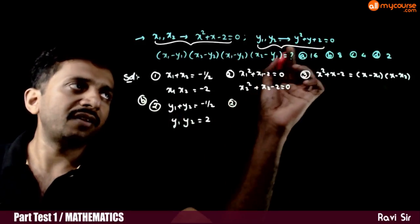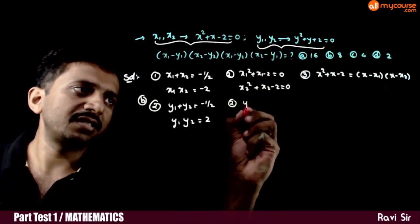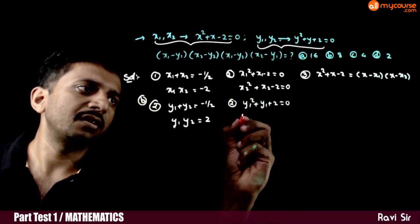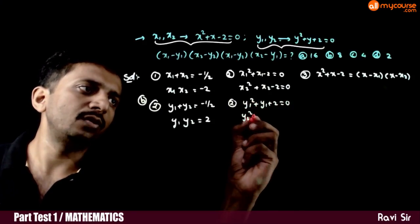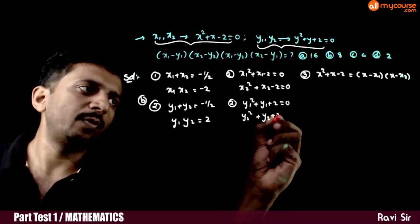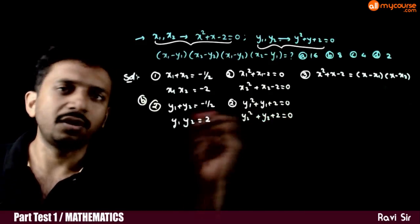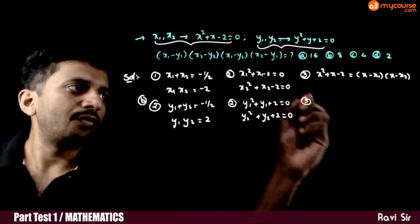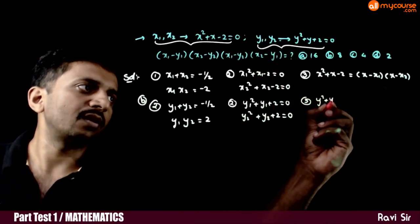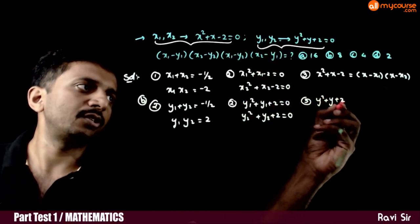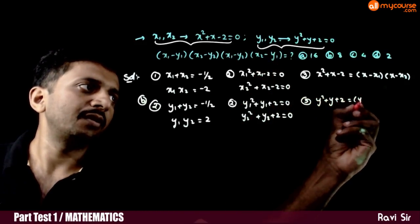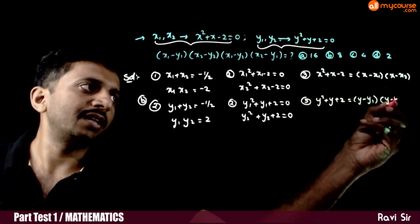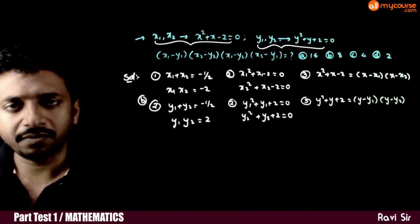Here, y1 and y2 satisfy the equation. So y1 squared plus y1 plus 2 equals 0, and y2 squared plus y2 plus 2 equals 0. The third form: y squared plus y plus 2 equals y minus y1 into y minus y2.